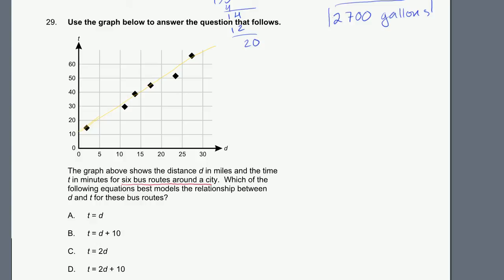Which of the following equations best models the relationship? So t equals d. What would that look like? I'll do it in this light green color. When t equals 10, d equals 10. When t equals 20, d equals 20. When t equals 30, d equals 30. So that's this line right here. That doesn't seem to model these black dots too well. Let me do another one. t equals d plus 10. When d is 0, t will be 10. When d is 10, t will be 20. When d is 20, t will be 30. It's an improvement, but it still doesn't look that great.